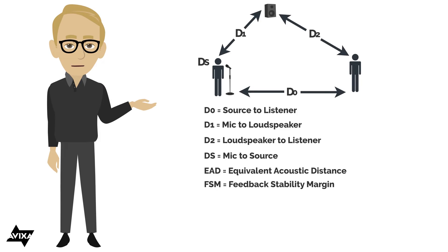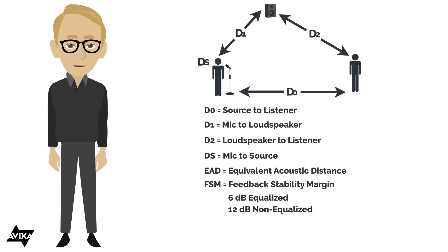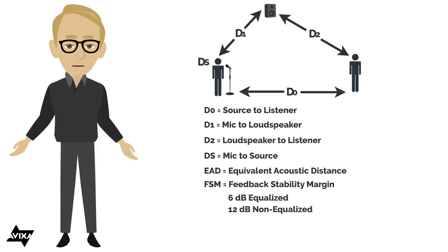There's also the FSM. FSM stands for Feedback Stability Margin. In other words, how do I keep it free from that ringing before it goes into feedback? And there's two numbers that you'll see for this. For a sound system that's been equalized, in other words its response has been smoothed out, you would use an FSM, Feedback Stability Margin, of 6 dB. For a system that's non-equalized, you'll see that the 12 dB number is used.